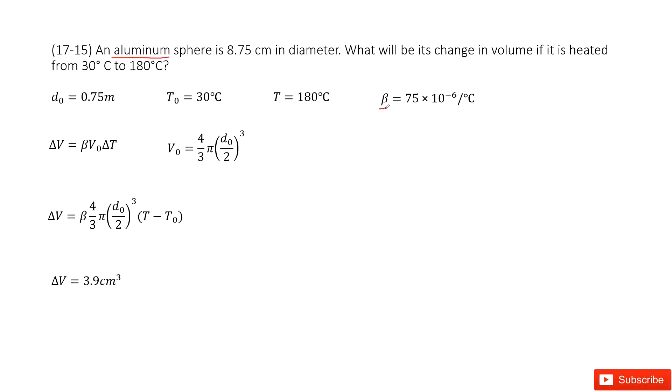So we can check our textbook to get beta. Now we need to find the change in volume. As we learned in our textbook, the change in volume for thermal expansion is this function. You can see beta is given, so the next step is to find V₀, and V₀ for a sphere.